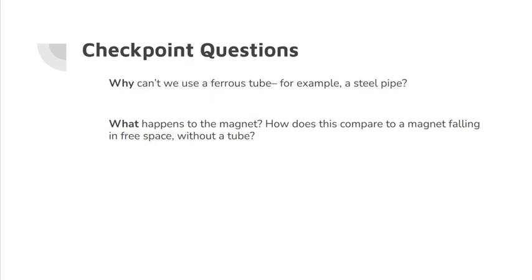Here are some quick checkpoint questions. Why can't we use a ferrous tube, for example, a steel pipe? The reason we can't use a ferrous tube for this experiment is that by definition it contains iron, which has a strong magnetic property and would create an induced magnet that would interfere with the falling magnet. What happens to the magnet during this experiment, and how does it compare to a magnet falling in free space without a tube?